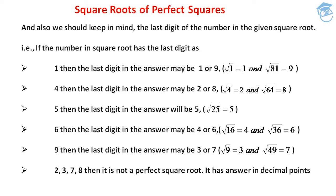If we have 4 as the last digit under the square root, then the last digit in the answer may be 2 or 8. Because √4=2 and √64=8 — both have 4 as their last digit. So whenever we get last digit 4 under the square root, the answer's last digit may be 2 or 8.